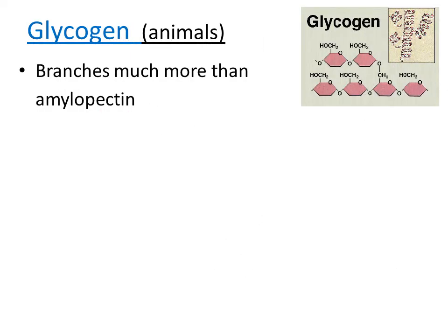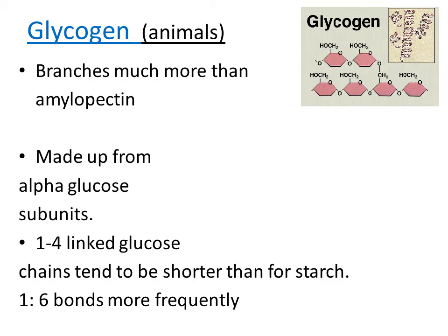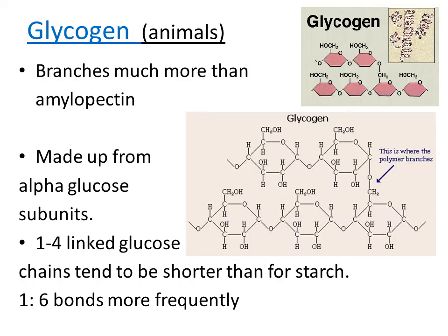Glycogen is very similar to amylopectin. It's the storage compound for glucose in animals, and it's also made up of alpha glucose subunits with one-to-four linked glucose chains, which are a bit shorter than in starch because we get a lot more of the one-to-six bonds. This results in a molecule with a great number of side chains.